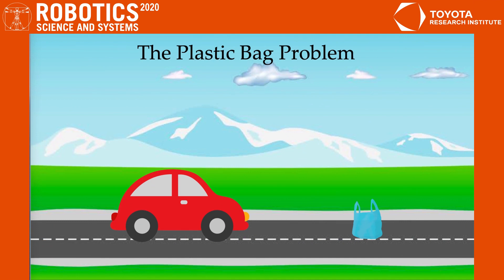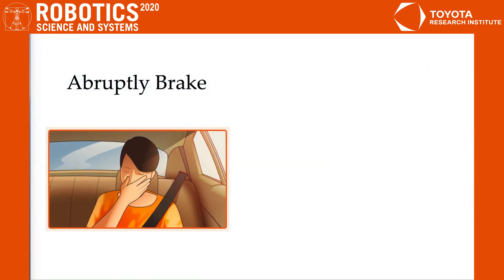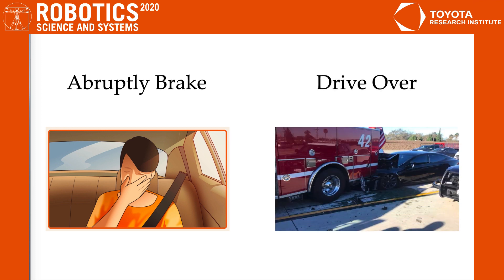A common problem people working in autonomous driving deal with is the plastic bag problem. Imagine that when you are driving your car on the road, suddenly you see a plastic bag in front of your car. What should an autonomous car do? It would either abruptly brake to avoid hitting the obstacle, but such brakes for every single plastic bag make the passengers really nauseous. Or the autonomous car can ignore the plastic bag and drive over it, but as we have seen, such actions can also lead to serious accidents.